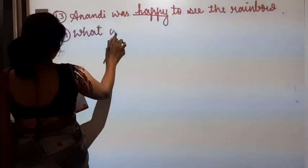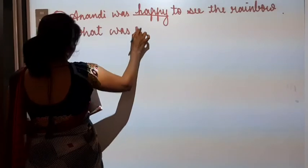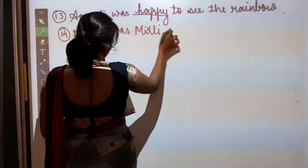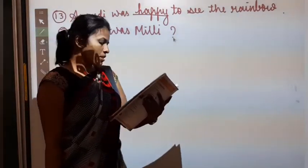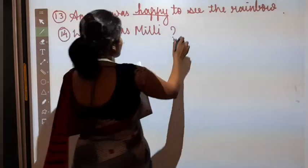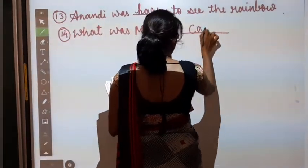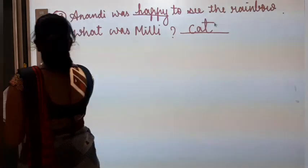What was Mili? Mili kya thi? Options are cat, parrot, dog or a cow. So Mili was a cat. Number fifteen.